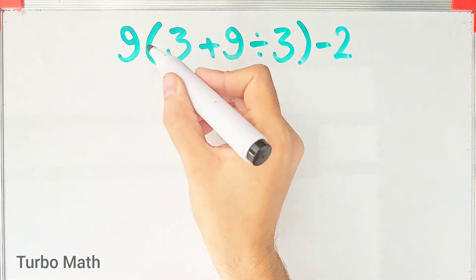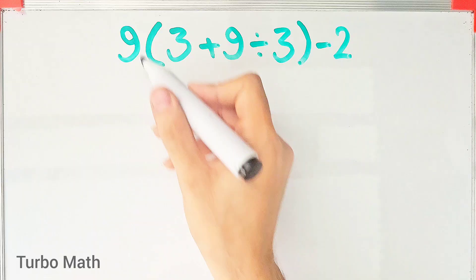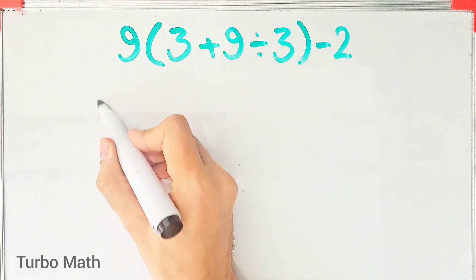9 times open parenthesis 3 plus 9 divided by 3, close parenthesis, then minus 2. What is the answer of this question?